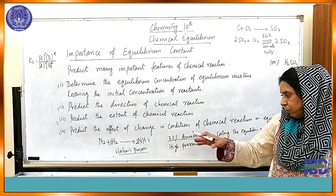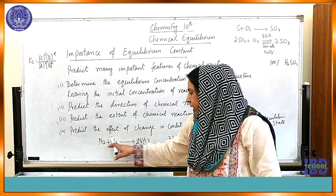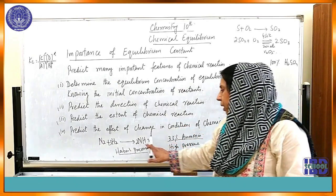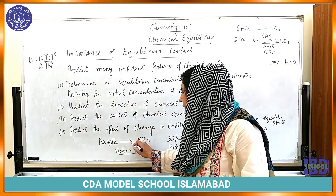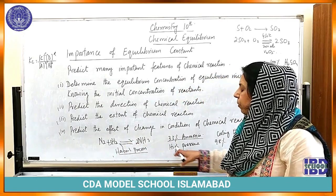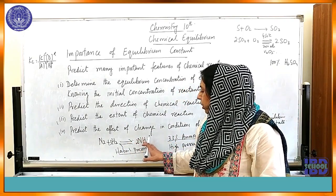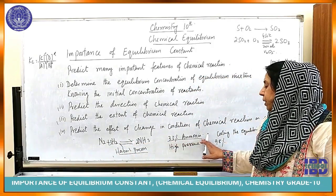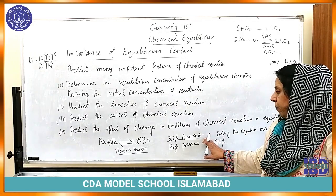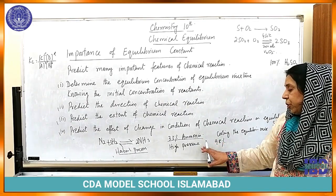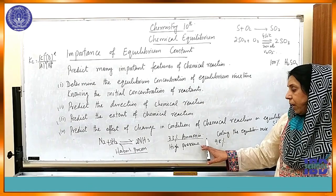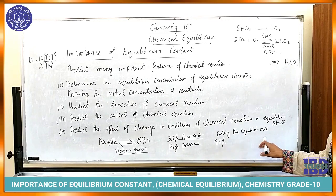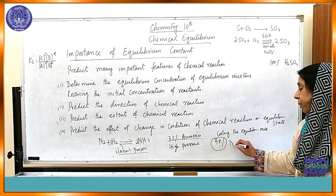Normally, when we have an equilibrium state reaction, we have 33% ammonia produced. This is a reversible reaction, so the backward reaction starts — ammonia breaks back into nitrogen and hydrogen — and at equilibrium state, we have 33% ammonia. But if we increase the pressure, we can get 98% ammonia.